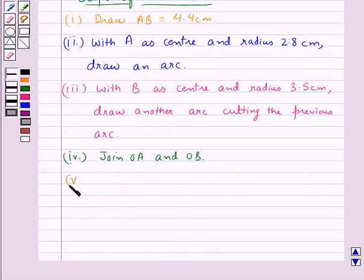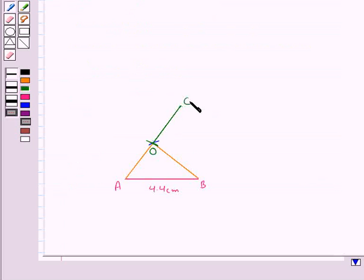Then we produce AO to C such that we have OC is equal to AO. So this is the point C where we have AO is equal to OC.